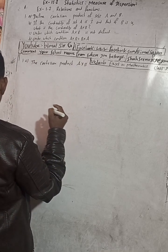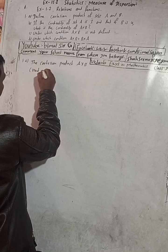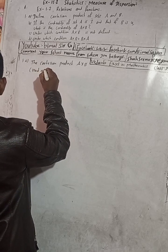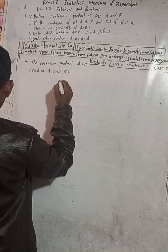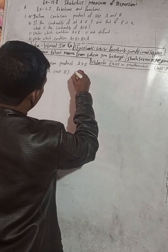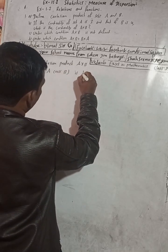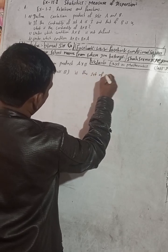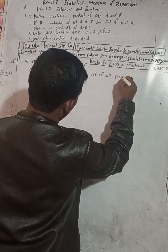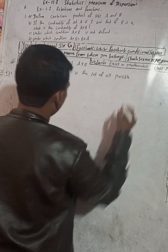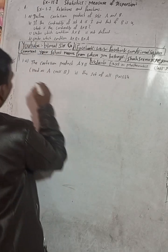A×B — read as A cross B. The Cartesian product A×B is the set of all possible ordered pairs.